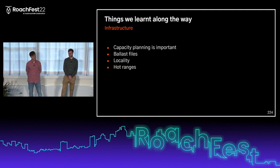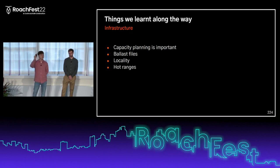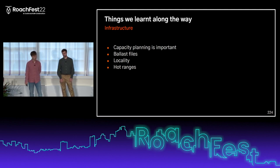Locality settings also help a lot when operating the cluster. For instance, if you're trying to upgrade the Kubernetes control plane version, you can take down three to five nodes at a time that are in the same locality, change those nodes, and then move on. About hot ranges, Pierre has some more notes, so I'm passing back to him.